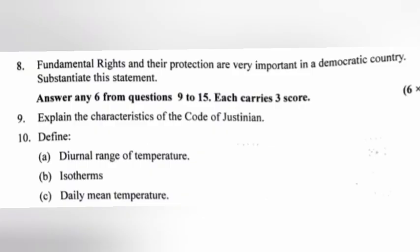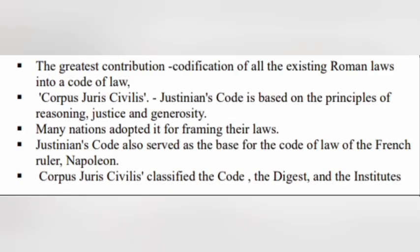Question 9: Explain the characteristics of the Code of Justinian. Answer: The greatest contribution was the codification of all existing Roman laws into a code of law — Corpus Juris Civilis. Justinian's code is based on the principle of reasoning, justice, and generosity. Many nations adopted it for framing their laws. It also served as the base for the code of law of French ruler Napoleon. Corpus Juris Civilis classified the code into the Digest and the Institutes.